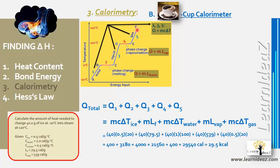Substituting: q₁ = 40 × 0.5 × 20, q₂ = 40 × L_f, q₃ = 40 × 1 × 100, q₄ = 40 × L_v, q₅ = 40 × 0.5 × 20. The total answer is 29,540 calories or 29.5 kilocalories.